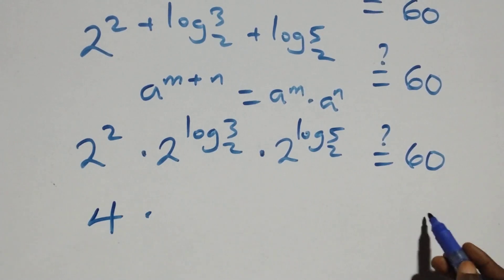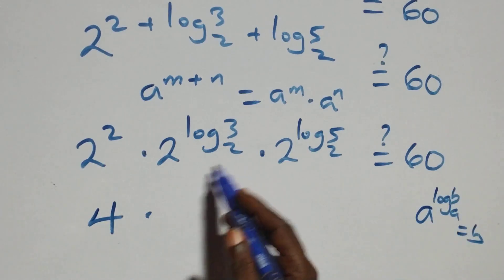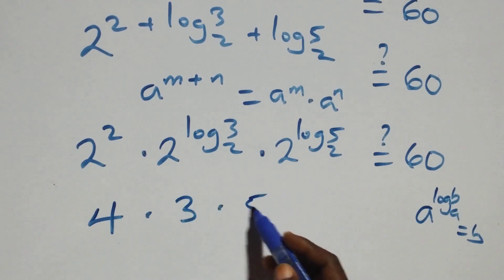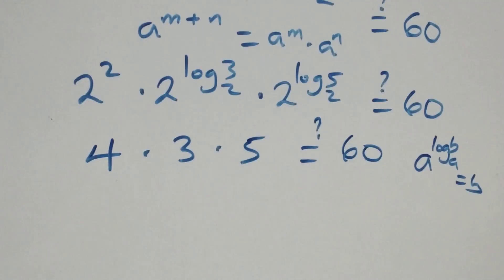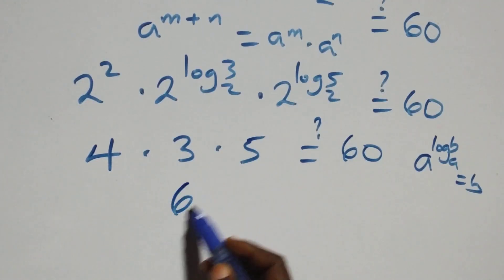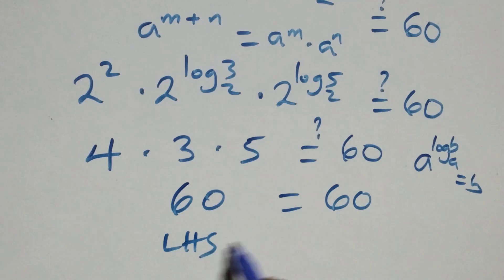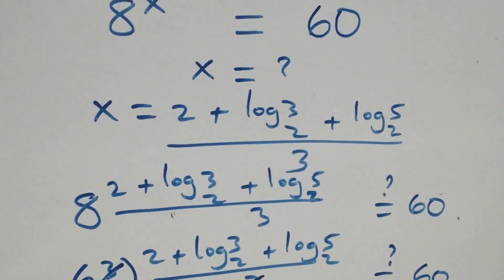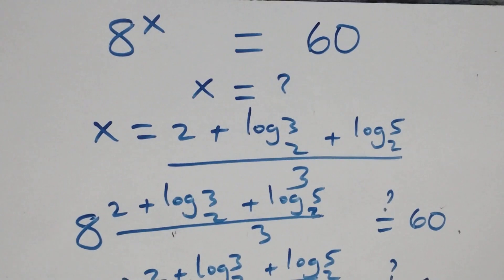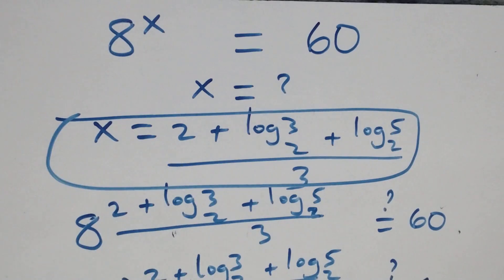This follows the law of indices: a raised to power m plus n is the same as a to power m times a to power n. So here we have 2 squared times 2 raised to power log 3 base 2 times 2 raised to power log 5 base 2, equals to 60. And this follows the identity a raised to power log b base a equals b. So we have 4 times 3 times 5, which is 4 times 3 equals 12, times 5 equals 60, which equals 60. Left hand side equals right hand side. Therefore, we conclude that x equals to 2 plus log 3 base 2 plus log 5 base 2 all over 3 satisfies the given problem.